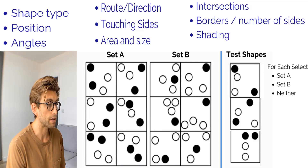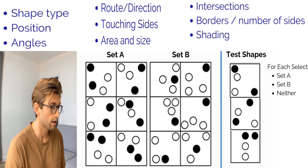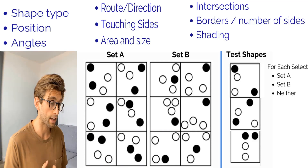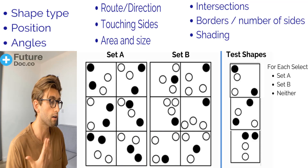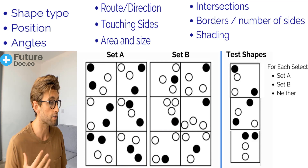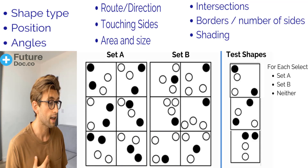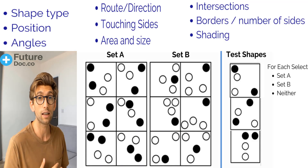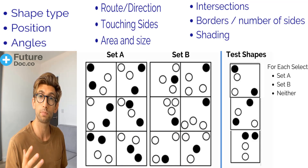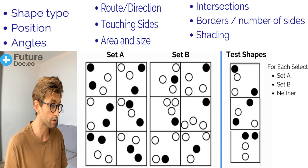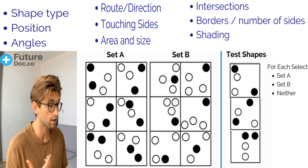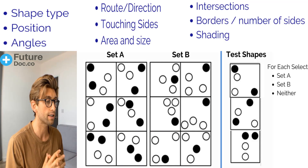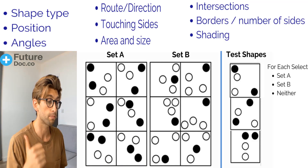Okay, so for question one, let's go through the answers. Looking at the pattern, we'll start with Set A. The shape type is all circles, so the pattern is not going to be related to angles — there are obviously no angles — and there's no rotation or direction. There are nothing touching sides, nothing to do with area and size. There are four items in each box of each set, so that is relevant but not the distinguishing feature. There are no intersecting lines, and the number of sides is the same because there are four circles in each.